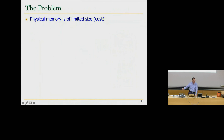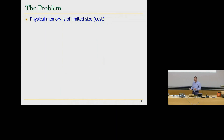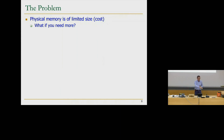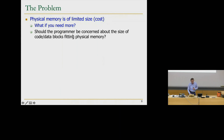One problem is physical memory is of limited size because it's costly. Historically you had very little physical memory. Today we have luxury — machines with 8 or 32 gigabytes — but in the past it was one or four kilobytes. What if the program needs more than what's available? The programmer needs to manage the disk: bringing data from disk into physical memory and putting data back. That's a lot of effort. So should the programmer be concerned about code and data fitting in physical memory? No, if you want programmers to work efficiently.